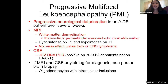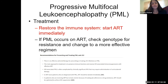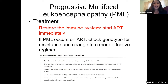Progressive white matter demyelination without mass effect — unlike toxo and CNS lymphoma. CSF JC virus DNA PCR is very helpful, positive in up to 90% of patients not on ART. If MRI and CSF are unyielding, pursue brain biopsy, where you see oligodendrocytes with intranuclear inclusions. Treatment: restore the immune system immediately. If PML occurs on ART, check the genotype for resistance and maybe change to a more effective regimen. There is really no effective antiviral therapy — the main approach is to start ART immediately.